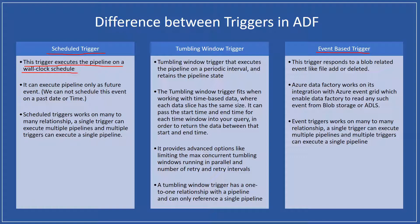It is simply like an alarm. We set up an alarm and whenever the time hits — like a particular day, a particular time of day, or maybe a weekday — on that situation, this schedule trigger will execute a pipeline. However, if you talk about a tumbling window trigger, it executes a pipeline on a periodic interval and retains the pipeline state.